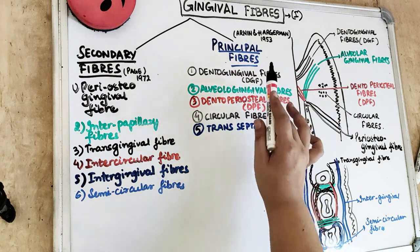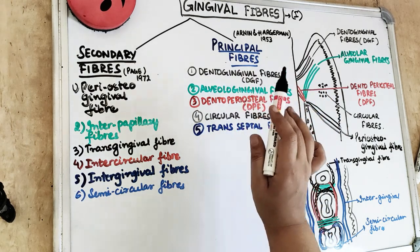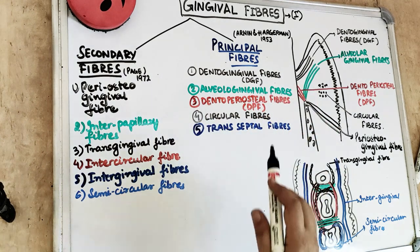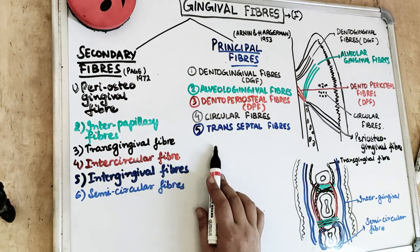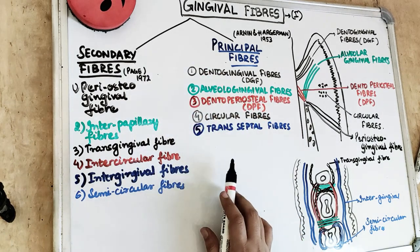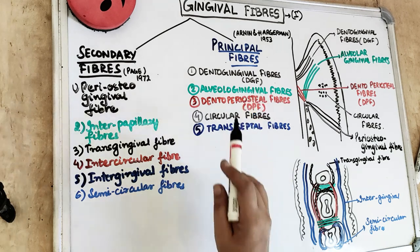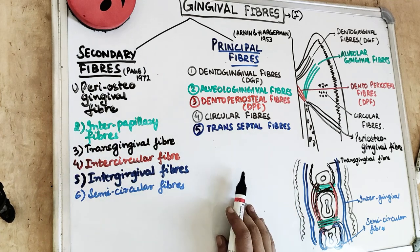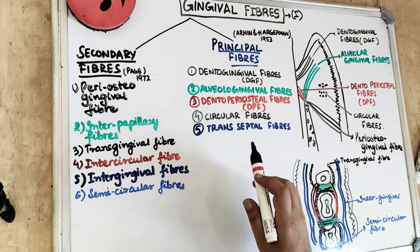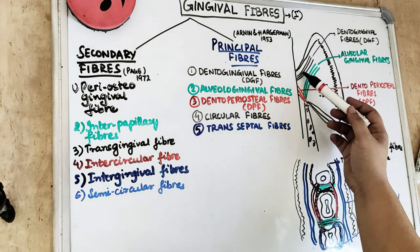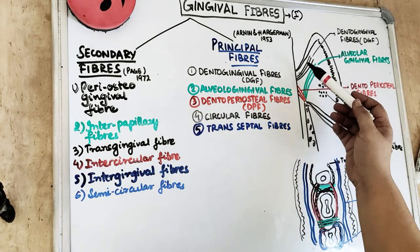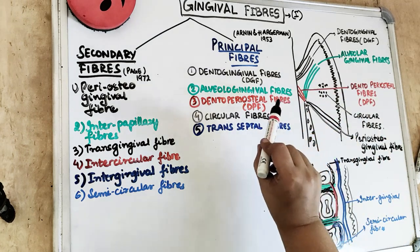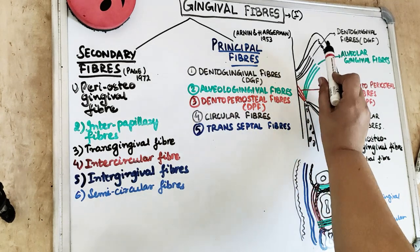The principal fibers are the main fibers of the gingival tissue. Arne and Hargerman in 1953 described these principal groups into five kinds of fiber bundles: the dentogingival fiber, the alveologingival fiber, the dento-periosteal fiber, the circular fiber, and the transseptal fiber. The dentogingival fibers are embedded into the cementum of the root and project from the cementum in a fan-like pattern, going into the free gingival margin.